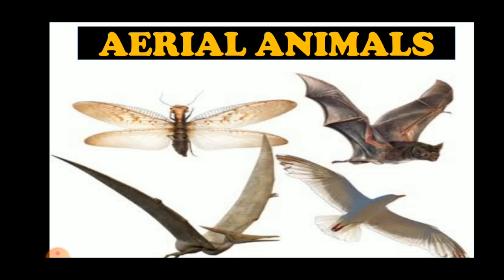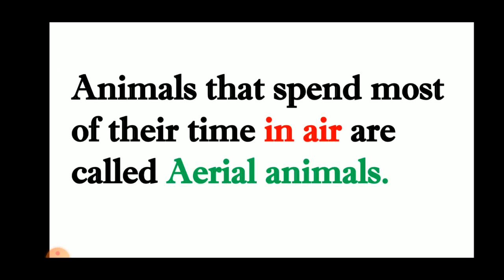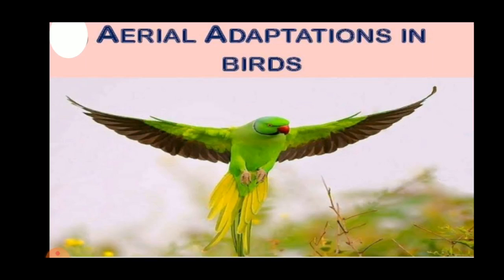The first one is Aerial Animals. Animals that spend most of their time in air are called Aerial Animals, for example, birds and bats. Now, let us understand the adaptation in Aerial Animals.